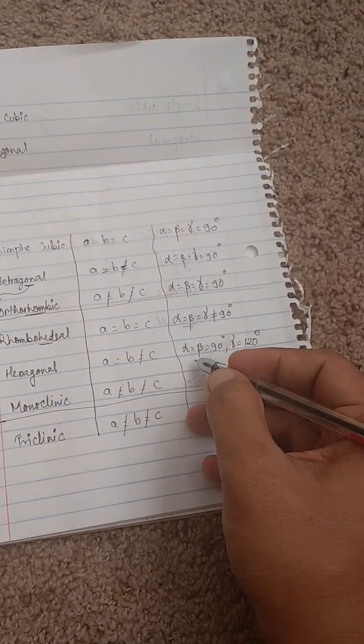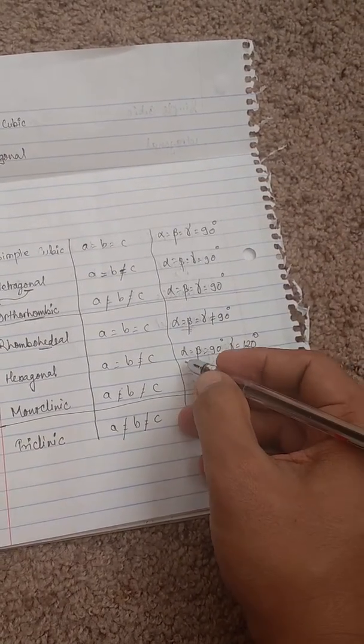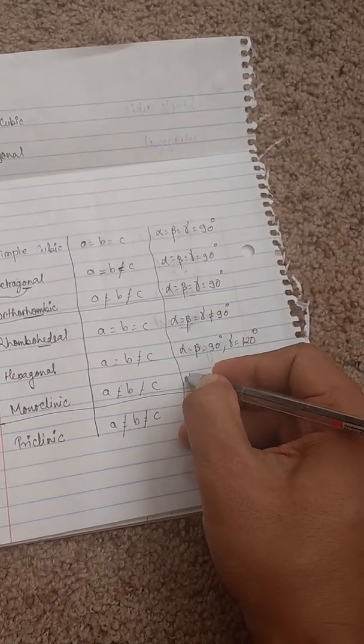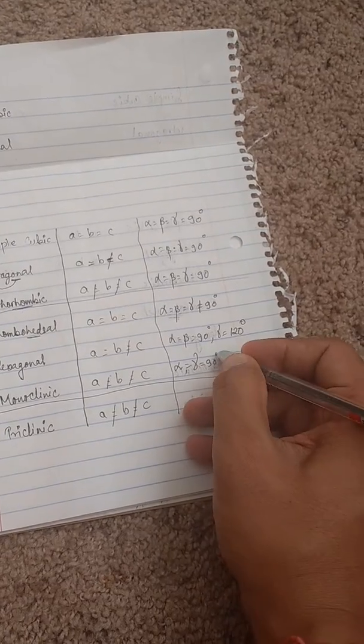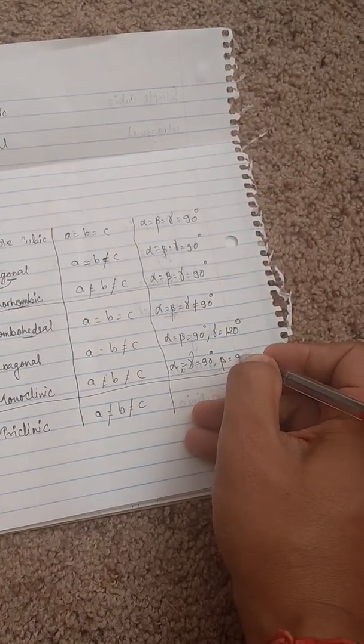Monoclinic versus hexagonal - what's the difference? In hexagonal, alpha and beta are important. In monoclinic, alpha and gamma are 90 degrees, but beta is not 90 degrees.